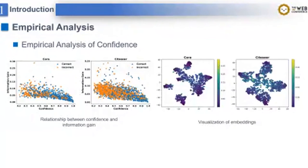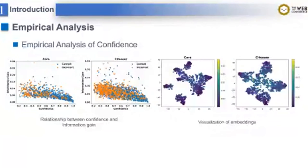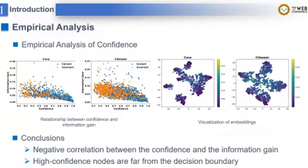Secondly, we visualize the node embeddings of GNN on Cora and Citeseer. The darker nodes represent easy nodes. From the plots, we find most easy nodes are far from the decision boundary. However, these nodes are always emphasized by current self-training methods by force of high confidence. Therefore, we say they are cheated by confidence in this way.